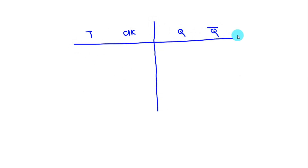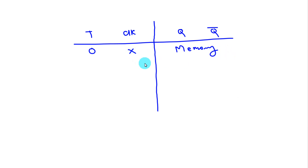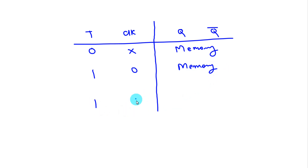Let's see the truth table of the T flip-flop. The columns are T, clock, Q, and Q-bar. If T is 0, the output will be memory — that is, the previous state — it doesn't matter whether the clock is 0 or 1. If T is 1 and clock is 0, the output will also be memory. If T is 1 and clock transitions from 0 to 1, the output will be toggling or racing.